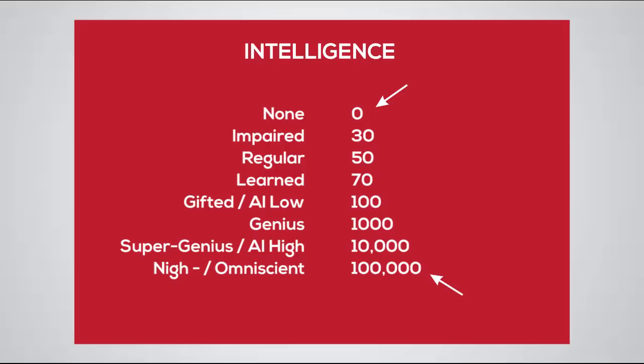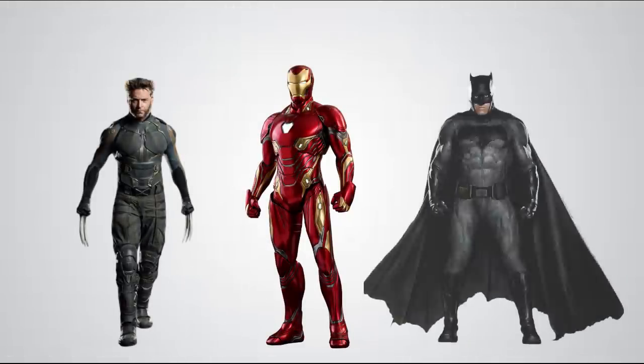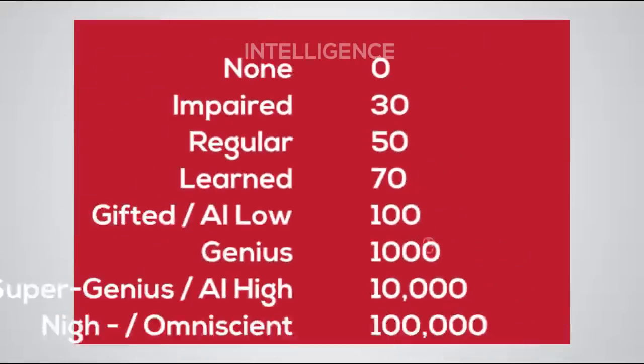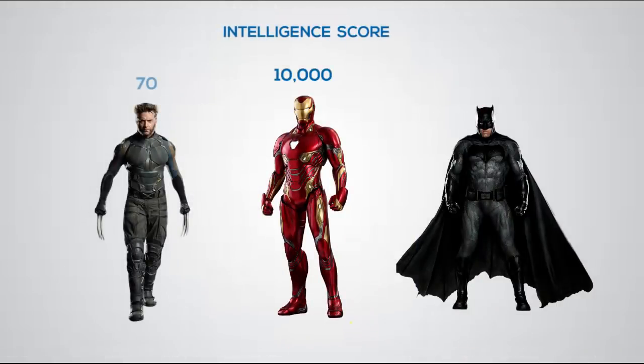So the character that you want to calculate should be numbered under those levels. Let's look at a real example. This is how Iron Man, Wolverine, and Batman's Intelligence levels are marked. Iron Man is a super genius. Wolverine has years of experience, so he's falling under the learned category. While Batman undoubtedly is a genius level intellect. So their intelligence scores will be 10,000, 70, and 1,000. This method also applies to the rest of the components.